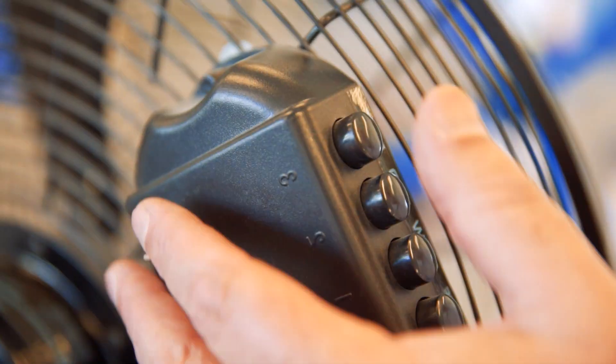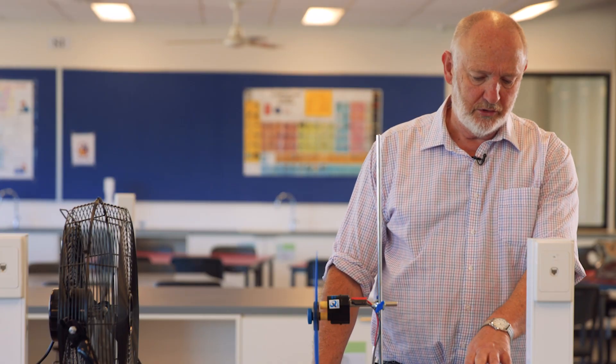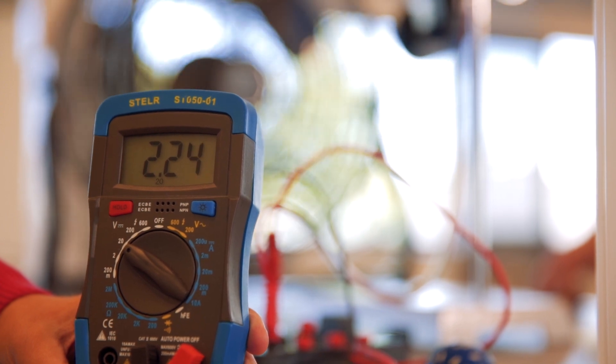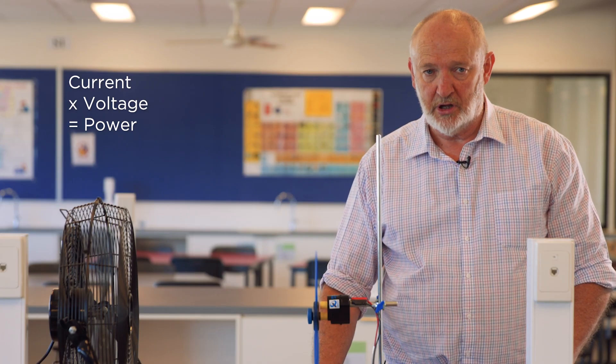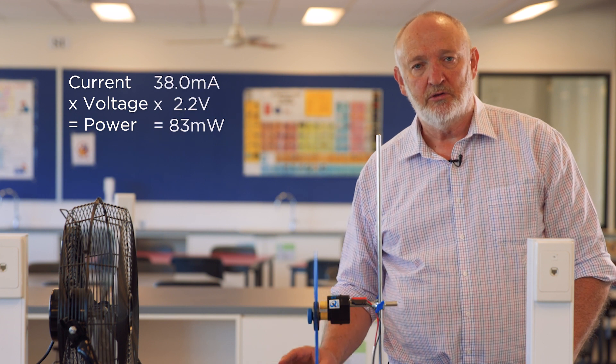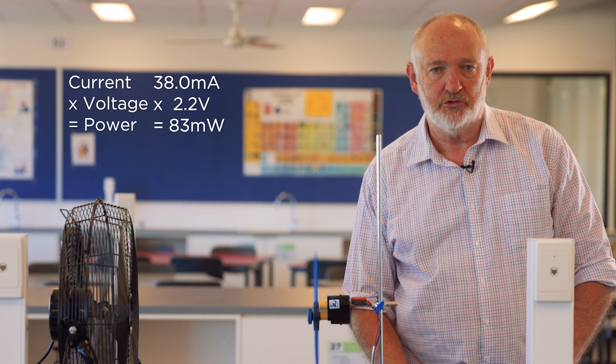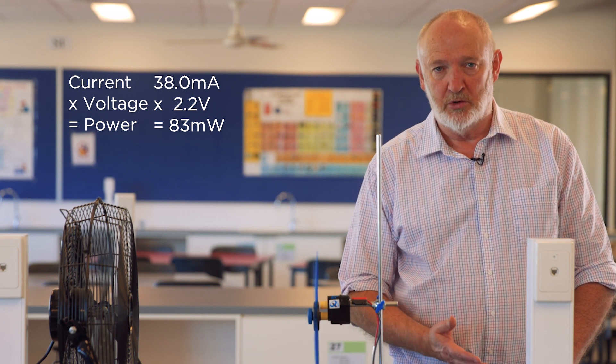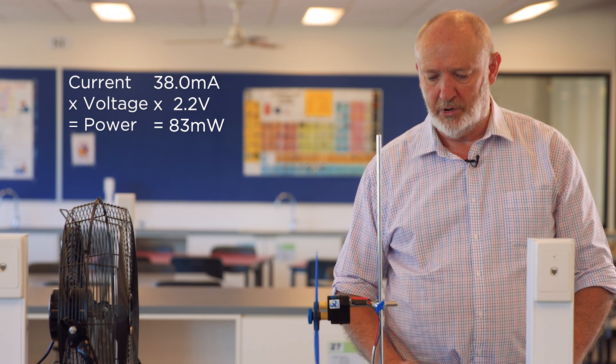I turn this on. So our voltmeter is still reading around about 2.2 volts and our ammeter is reading around 38 milliamps. If we multiply 38 milliamps by 2.2 volts, we will get the power in milliwatts. So that gives us a measure of the power.